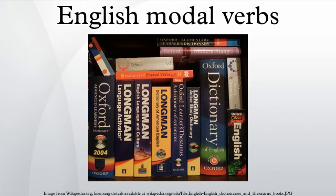In Dutch, cognates include 'mogen', 'moeten', 'kunnen', 'zullen', 'willen' — cognates of 'may', 'must', 'can', 'will', and 'shall'. In Swedish, cognates include 'må', 'måste', 'kunna', 'vilja', 'skola/ska' — cognates of 'may', 'might/must', 'can', 'will', and 'shall'. These generally have the same corresponding meanings in English, with the exception of 'vilja', which means 'to want to'.